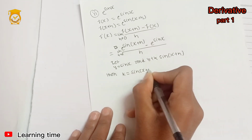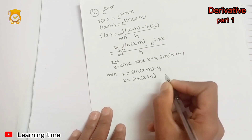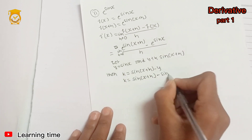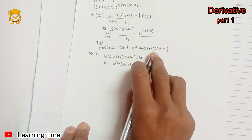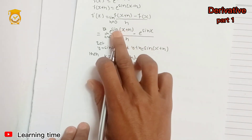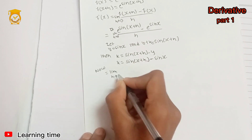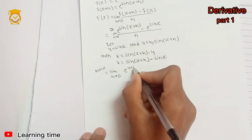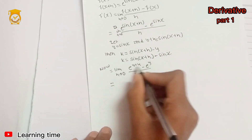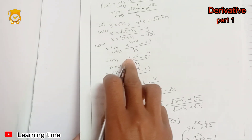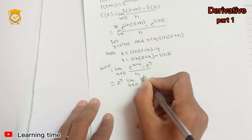Two sine(x plus h) and y minus y. Now limit x general to 0: e to the power (y plus k) minus e to the power y, divided by h. We take e to the power y common. Then limit x general to 0 we have e to the power y common, times (e to the power k minus 1) divided by k.